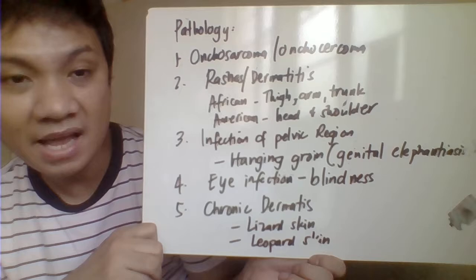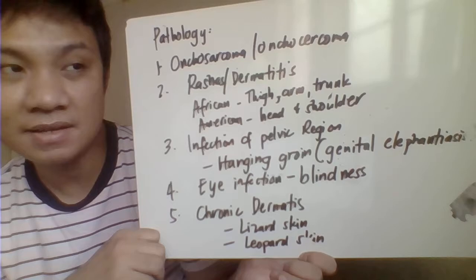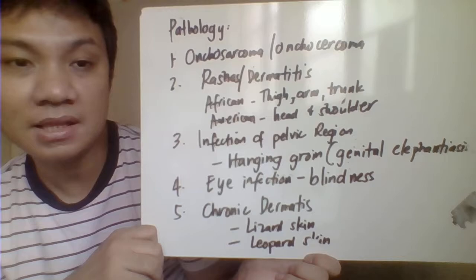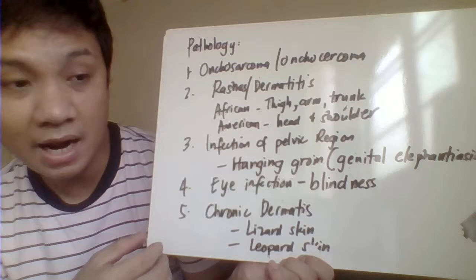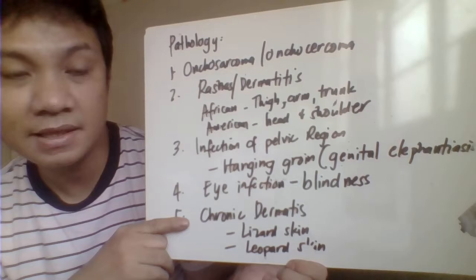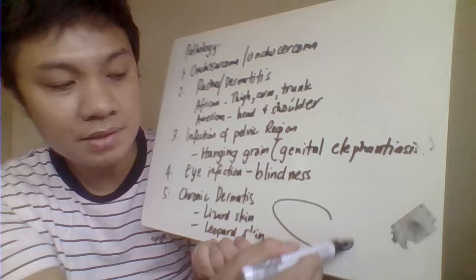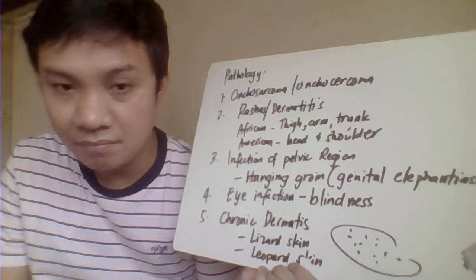If the parasite infects the eyes, it causes blindness — that is why it is called river blindness or blinding filarial worms. In the case of chronic dermatitis, intense itchiness lasting a long duration results in lizard skin, characterized by scaling and drying of the skin. There is also leopard skin, characterized by depigmentation or patchy discoloration of the skin with dark spots.